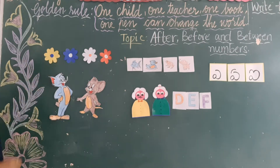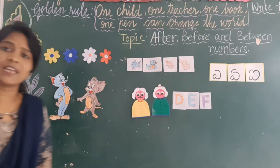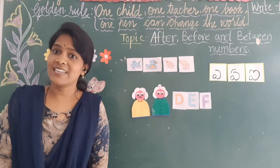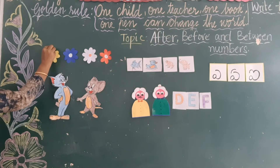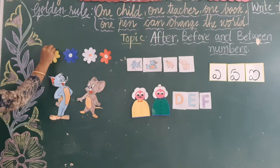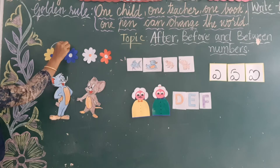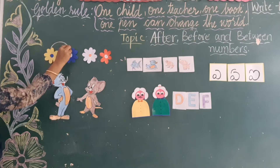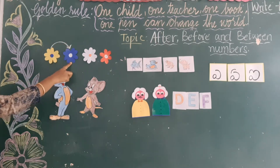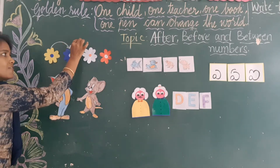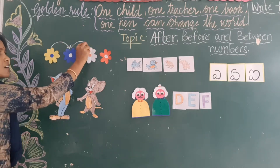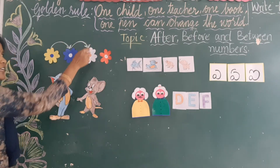First, which colour paper did I cut? Yes, yellow colour paper. And after yellow colour, which colour paper did I cut? Blue colour. And after blue colour, which paper did I cut? White colour.